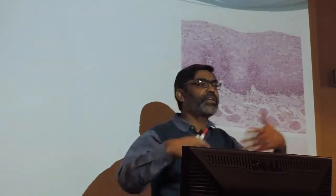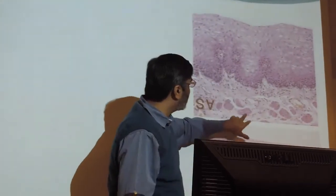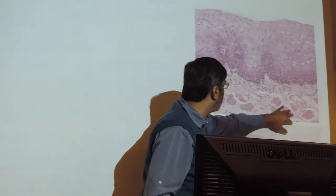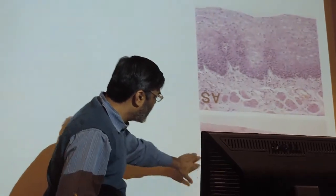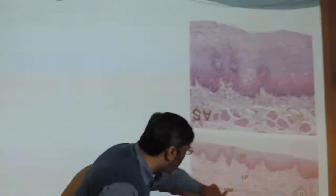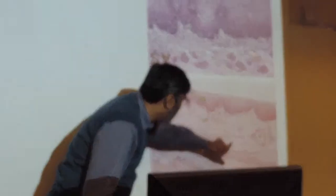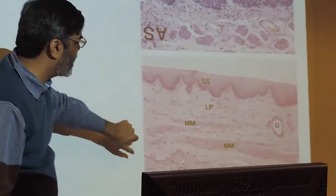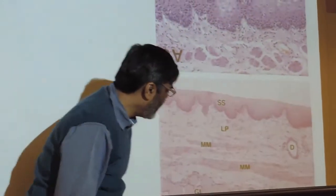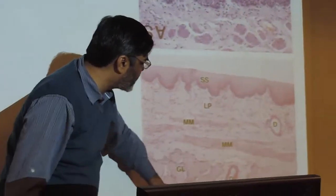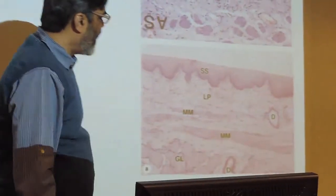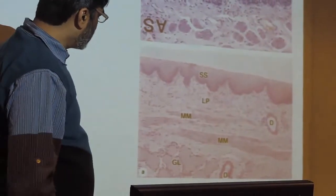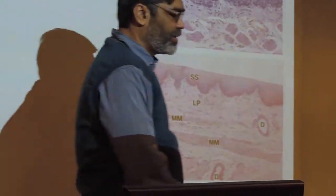This is the mechanism of replacement of the cells. You can see the seromucous glands here, and then the muscularis — a thin layer of muscle present. And then we have the submucosa; in the submucosa again we have glands, and then we have the muscle plexuses.